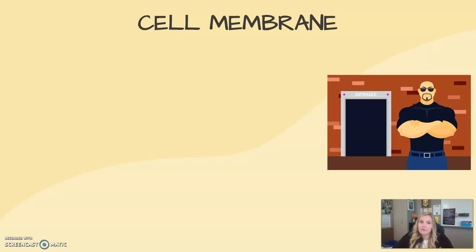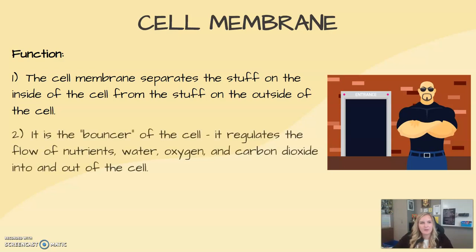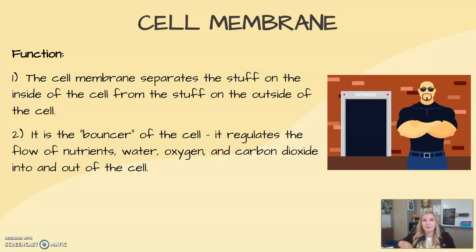The cell membrane is the outer layer of your cells that prevents things from coming in and out of your cells. It separates the stuff on the inside of the cell from the outside — it is that barrier. It's also known as the bouncer of the cell, where it regulates the flow of nutrients, water, oxygen, and even carbon dioxide into and out of the cell, telling the cell whether to bring certain nutrients in or let certain nutrients out.